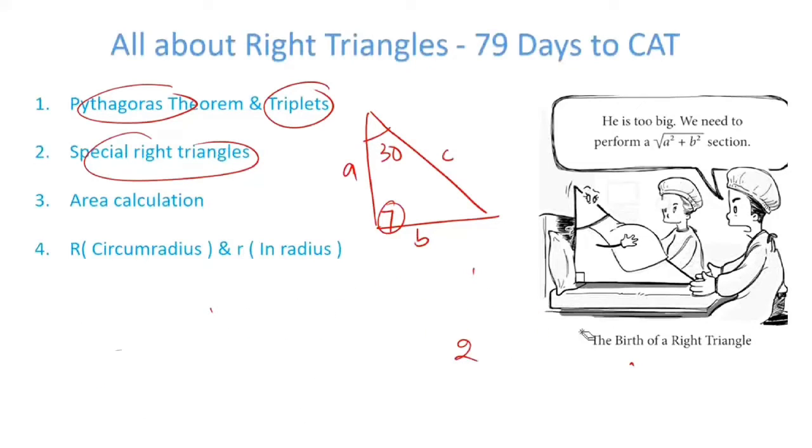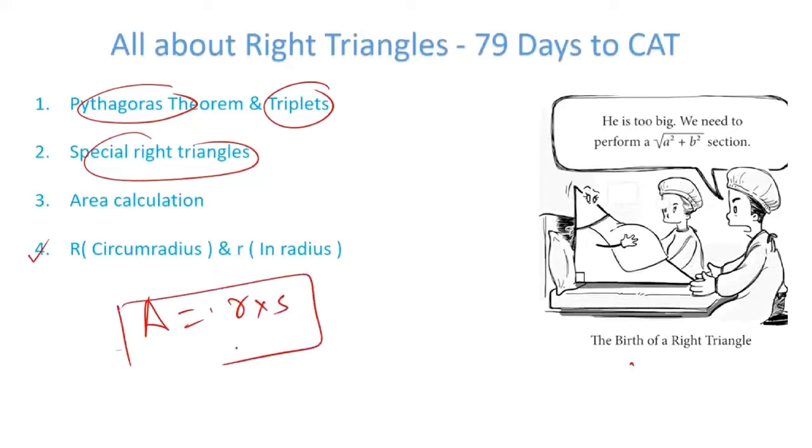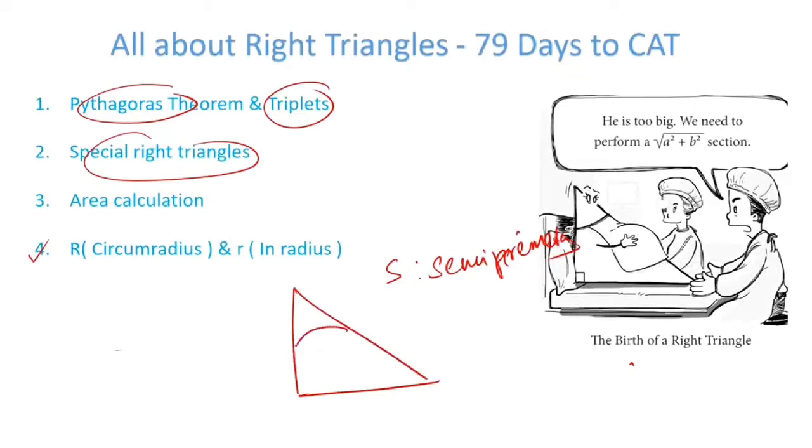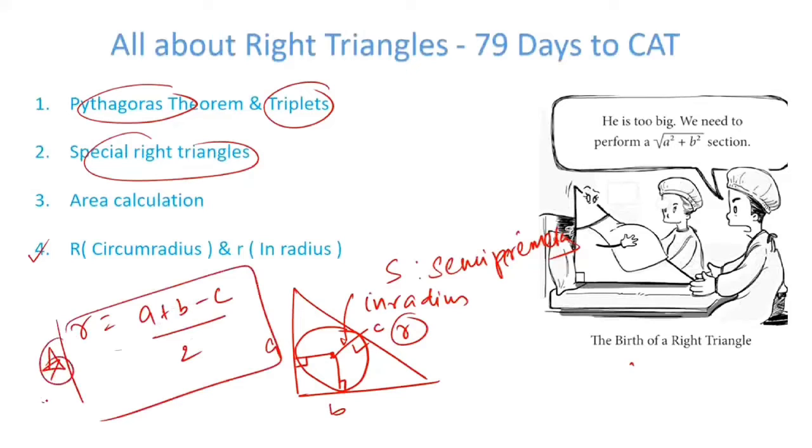What are the other ways of area calculation? The fourth way will be small r into small s, where small s is also called the semi perimeter. Let's see an example. When you draw a circle inside touching all three sides, then at the point of contact, the radius of this circle is perpendicular to the sides of the triangle. The radius is also called inradius represented by small r. So if this is a, this is b and this is c, small r is also given as a plus b minus c upon 2. A very important formula has been used in CAT several times.